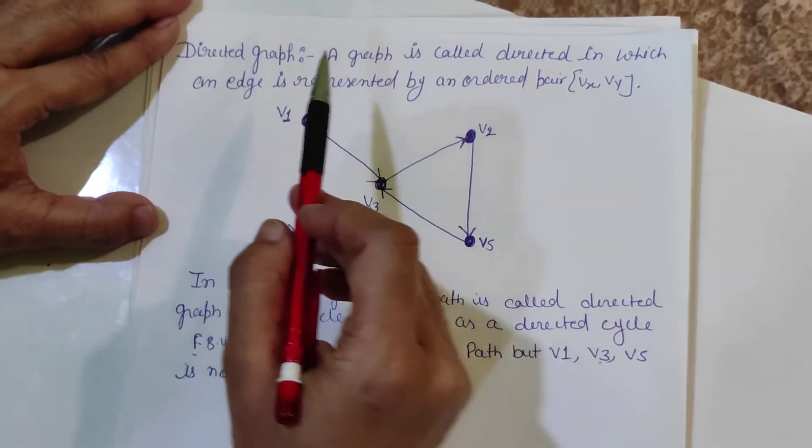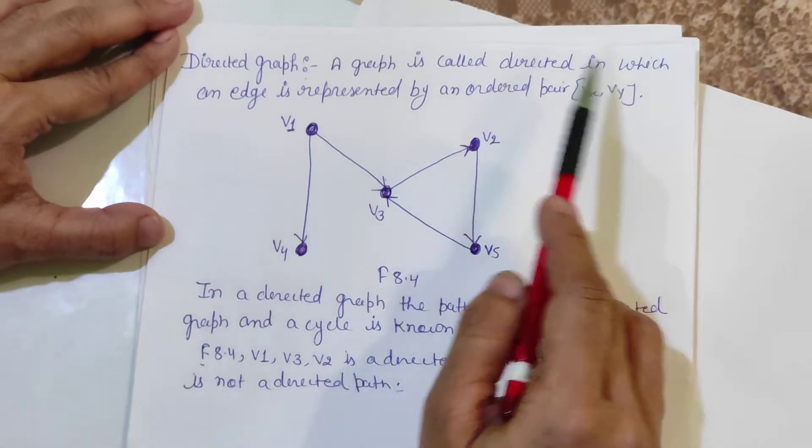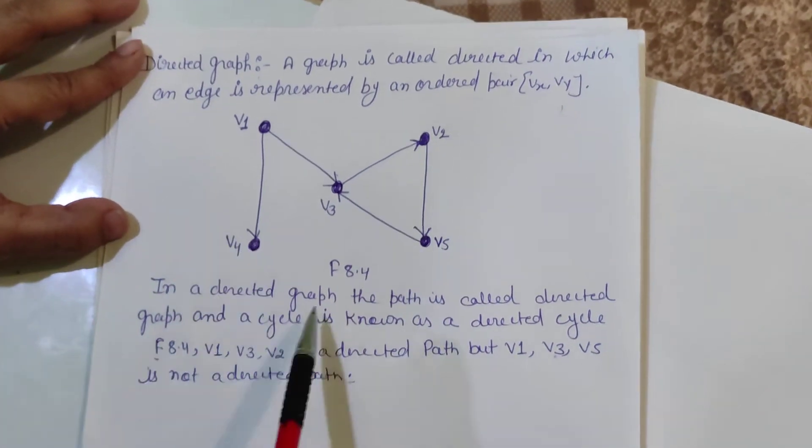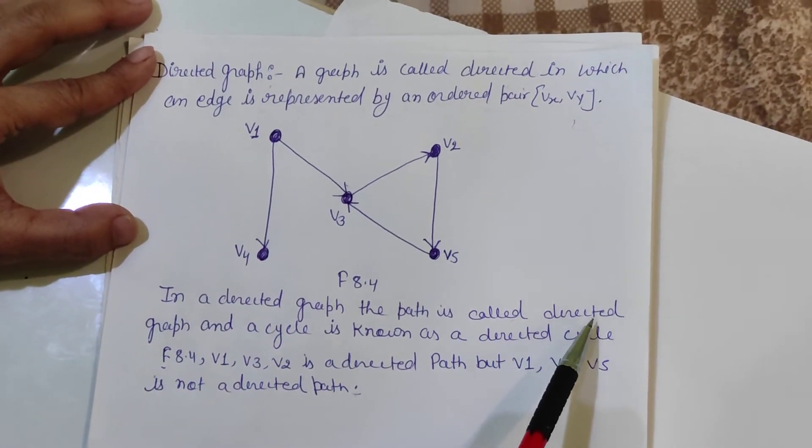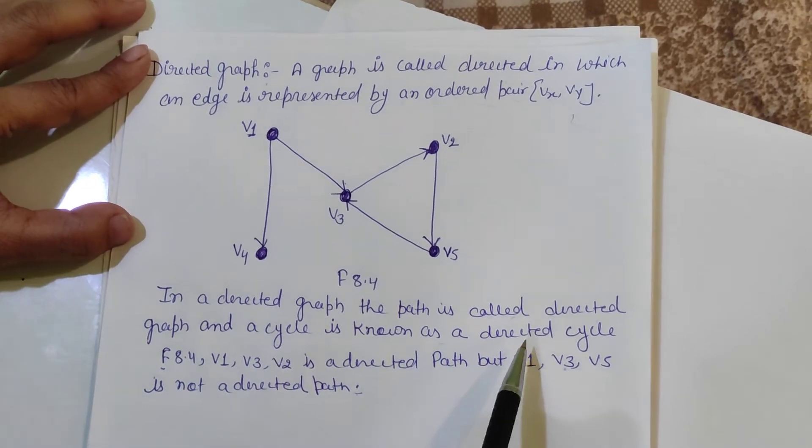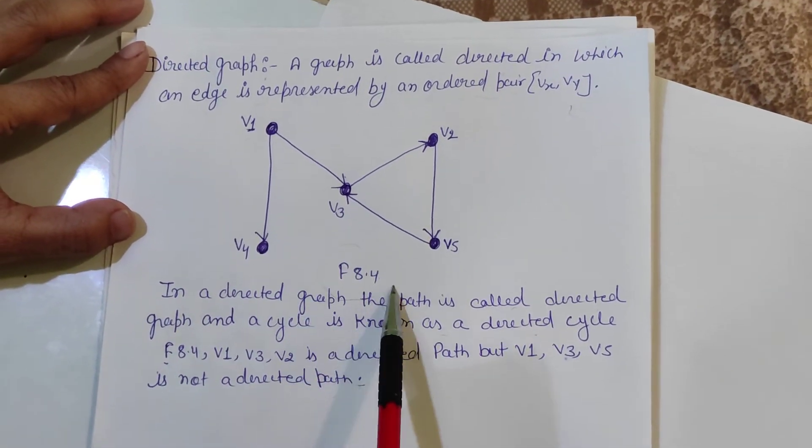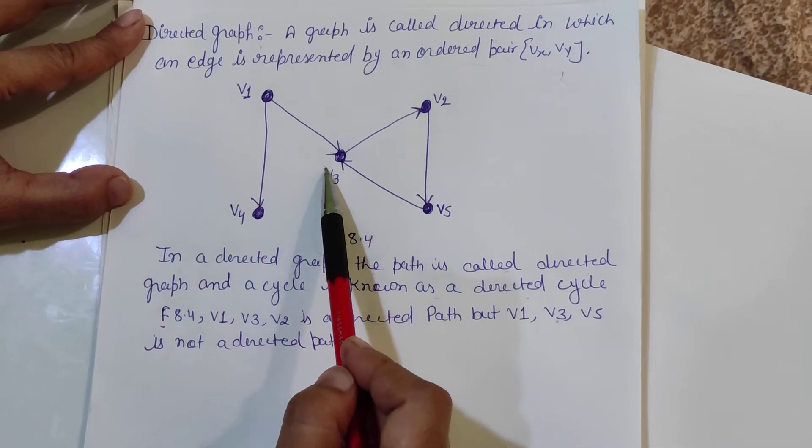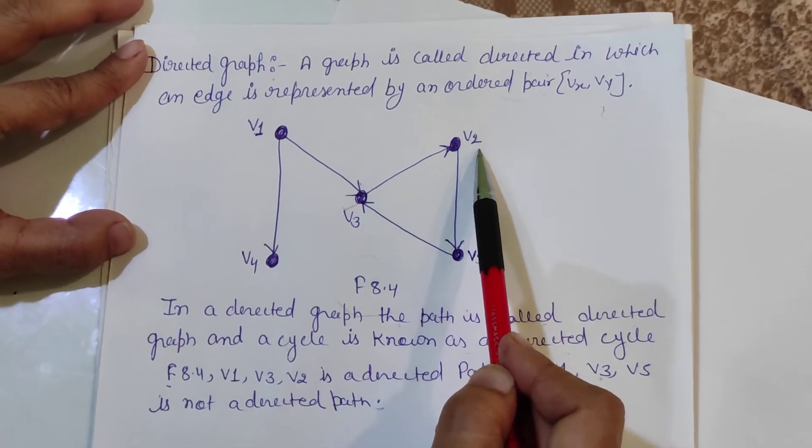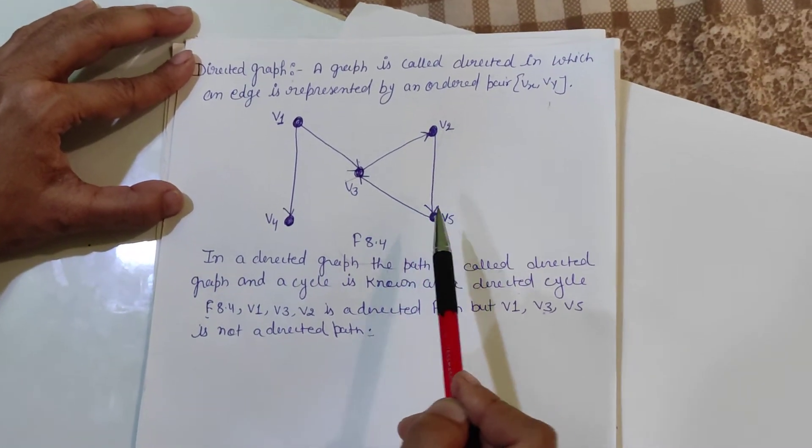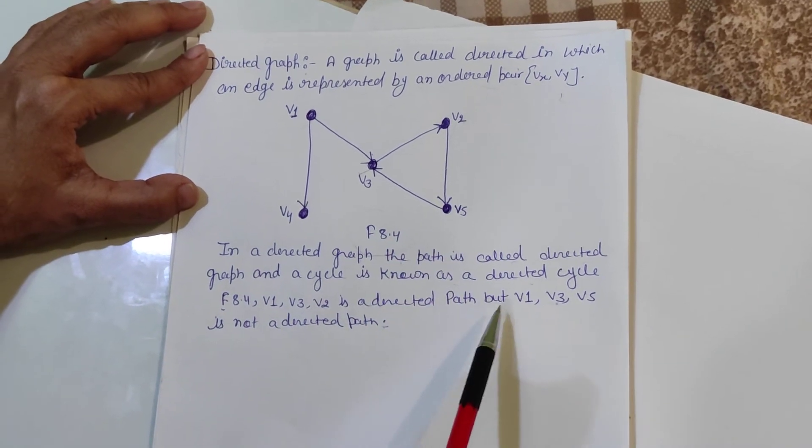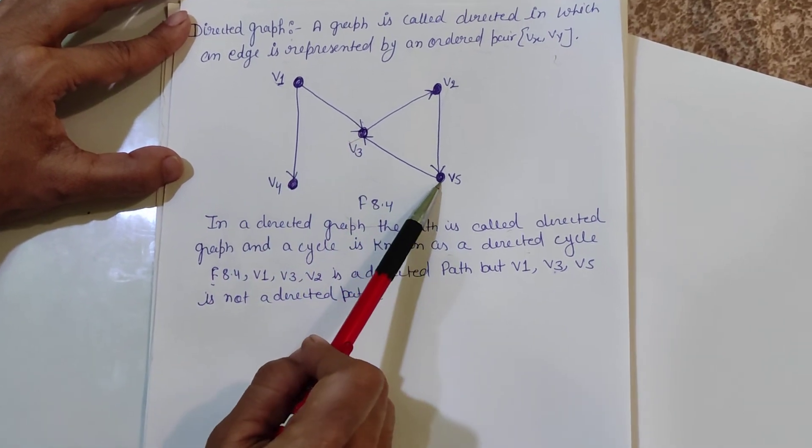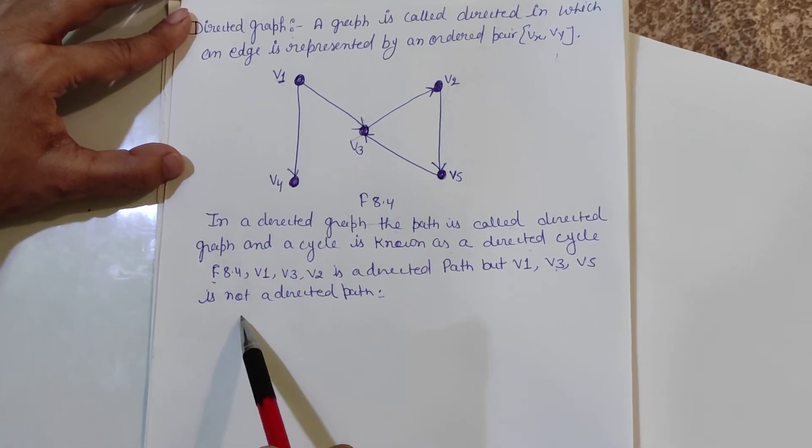Directed graph: A graph is called directed in which an edge is represented by an ordered pair Vx, Vy. In directed graph, a cycle is known as a directed cycle. In figure 8.4, V1, V3, V2 is a directed path but V1, V3, V5 is not a directed path.